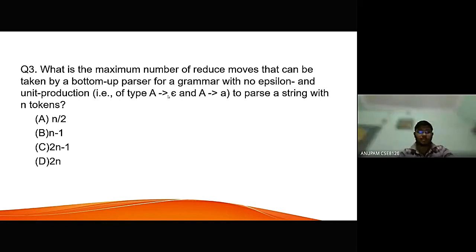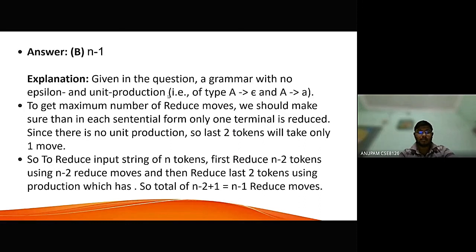Moving to the third question. What is the maximum number of reduce moves that can be taken by bottom-up parser for grammar with no epsilon and unit production to parse string with n tokens? The answer is n minus 1. Because to get the maximum number of reduce moves, we should make sure that in each sequence form, only one terminal is reduced. Since there is no unit production, last two tokens will take only one move. And so, to reduce input strings of n tokens, first reduce n minus 2 tokens using n minus 2 reduce moves, and then reduce last two tokens using production which has total of n minus 2 plus 1, that is n minus 1 reduce.